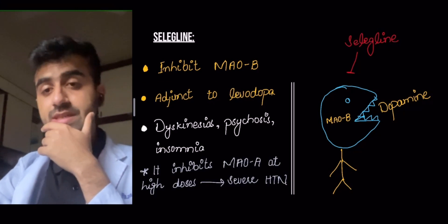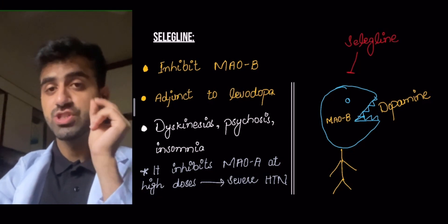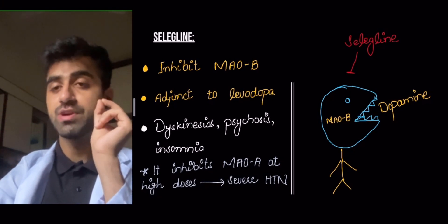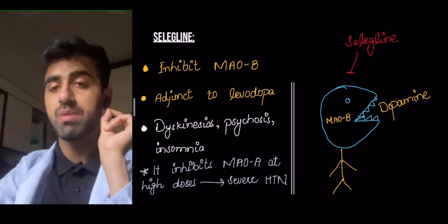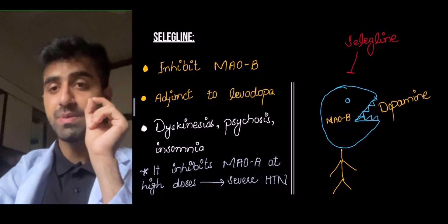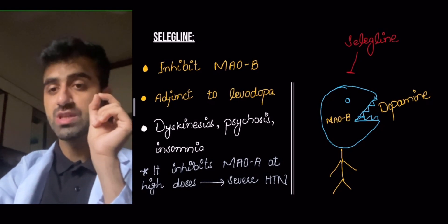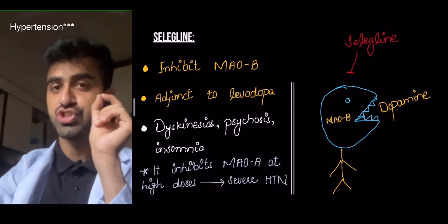An important fact to remember: selegiline inhibits MAO-A at high doses, which can cause severe hypertension. This is an important point — at high doses it inhibits MAO-A, which can cause severe hypertension.